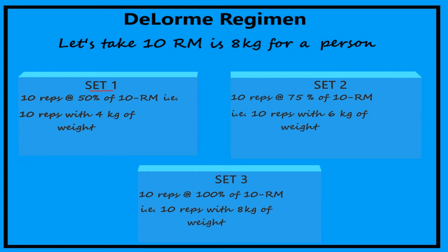For set 1, the person is going to perform 10 reps with 50% of the 10RM — that is, he is going to perform the resisted exercises with 4 kgs of weight.